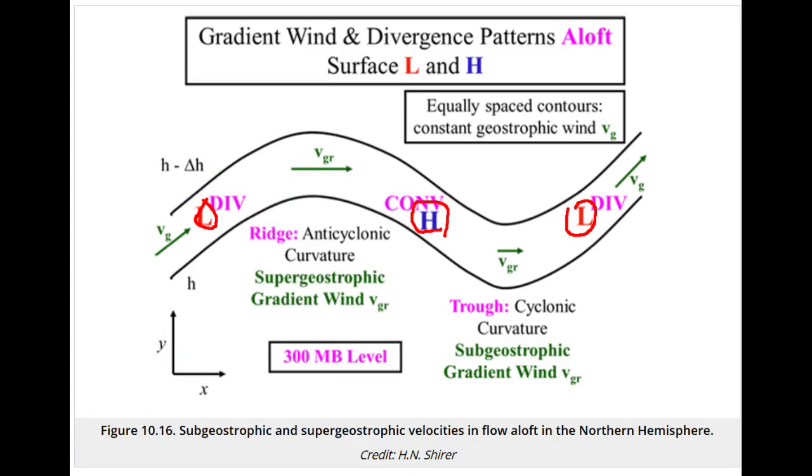Thus, gradient flow contributes to surface weather. We often see a surface low forming on the downwind side of a trough.